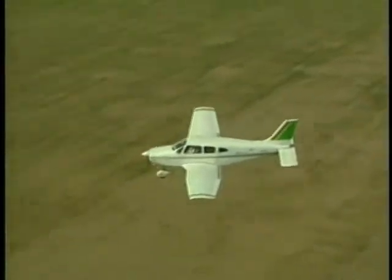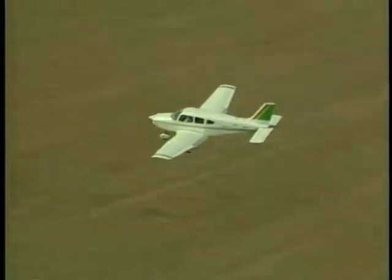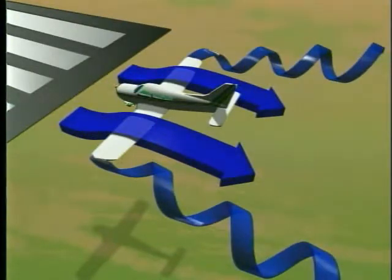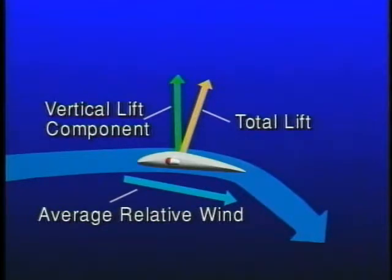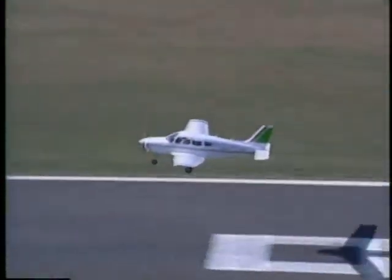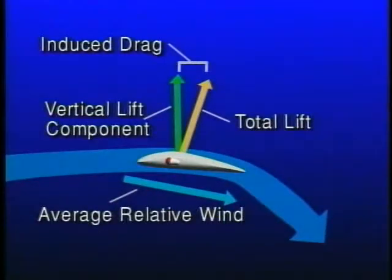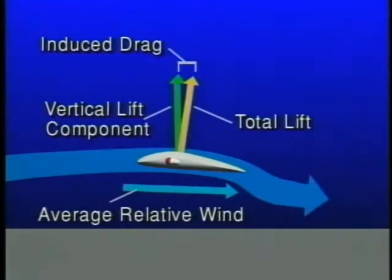The phenomenon known as ground effect occurs when the Earth's surface interferes with normal airflow patterns, thus causing a reduction in induced drag. During flight at altitude, the downwash created by wing tip vortices causes the average relative wind to be inclined downward. Because lift acts perpendicular to the average relative wind, total lift is inclined aft by the same amount. The component of lift acting in a rearward direction is induced drag. As your airplane descends to within one wingspan of the ground, the wing tip vortices and resulting downwash are deflected horizontally. This, in turn, moves the average relative wind closer to the horizontal and the total lift vector closer to vertical, thus increasing the vertical component of lift and decreasing induced drag.